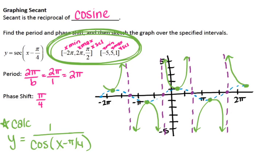For grading, I want to see your tick marks labeled, just like I labeled mine for the black graph. Then sketch out your asymptotes and your curves. Even on the calculator you can see where the asymptotes are, because that's where your graphs go in opposite directions.